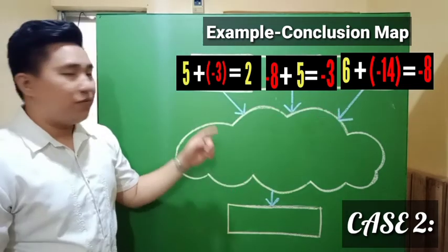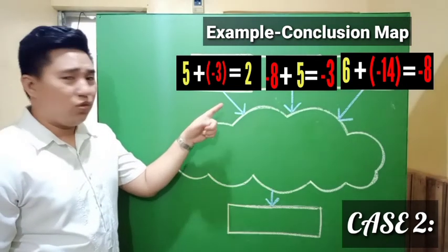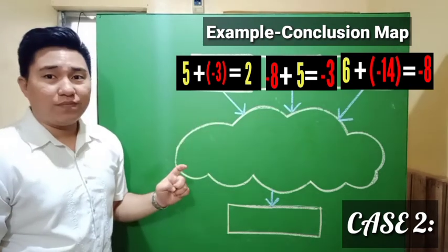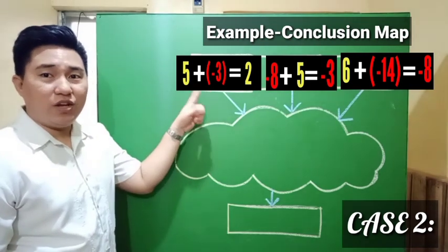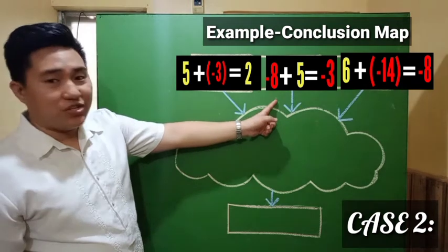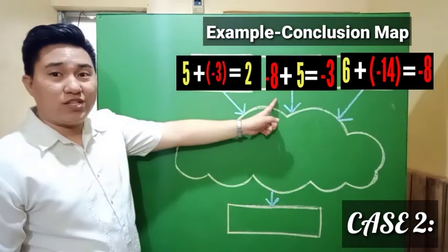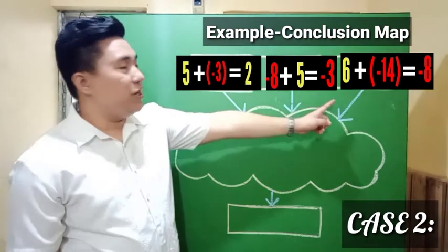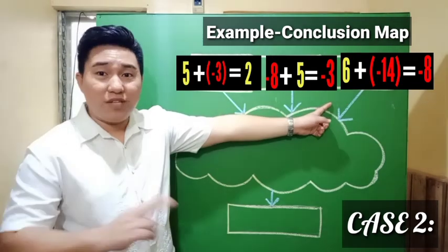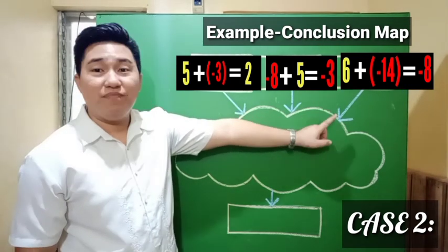For example one: we subtract 3 from 5 to get 2. Why is 2 positive? Because we get the sign from the larger absolute value — 5 is larger than 3, so we take the sign of 5, which is positive. For example two: negative 8 has a larger absolute value than 5, so we take the sign of 8, which is negative. For example three: 14 is larger than 6 in terms of absolute value, and the sign of 14 is negative — that's why the result is negative 8.